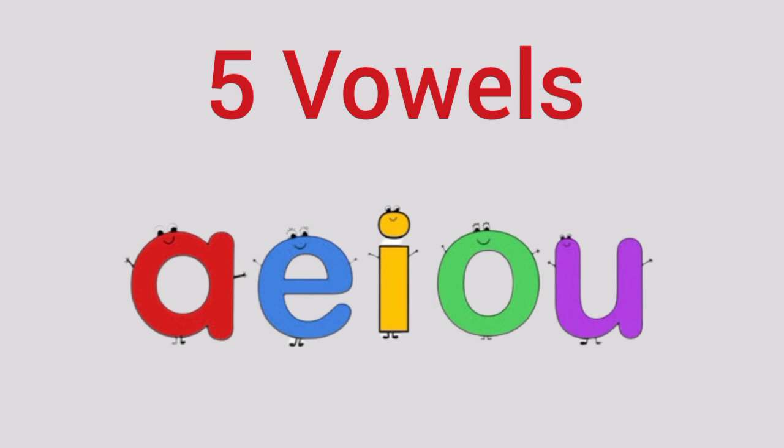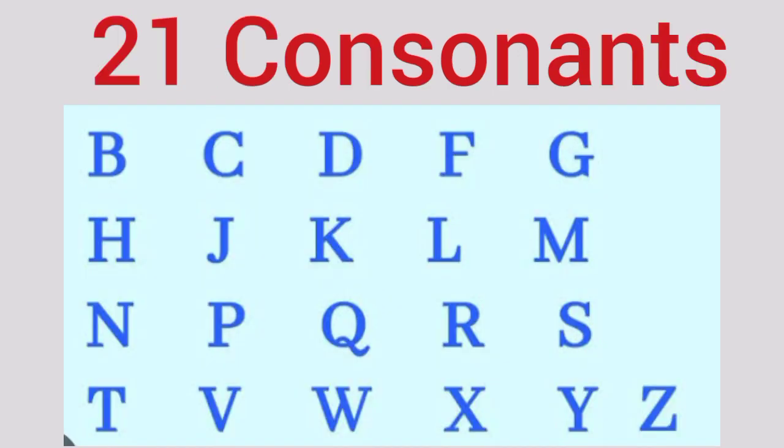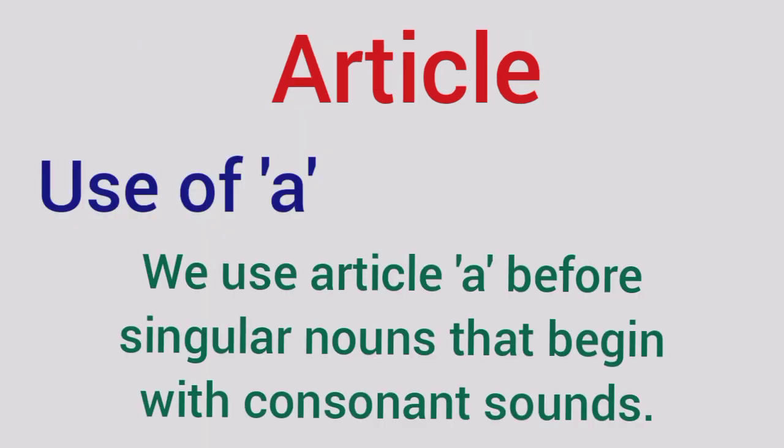Of these, five are vowels and rest of them are consonants. Article use of a: we use article a before singular nouns that begin with consonant sounds.